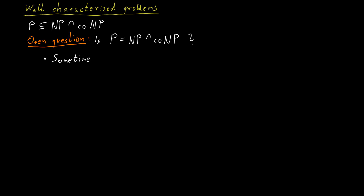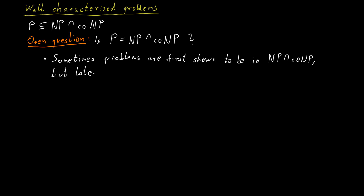Over the years, there have been several examples of problems that were first shown to be in NP intersect co-NP, but which then turned out to be in P. Primes is an example for this. It has been known for a long time that primes is contained in NP intersect co-NP, but only in 2002 we learned that primes is really also contained in P.